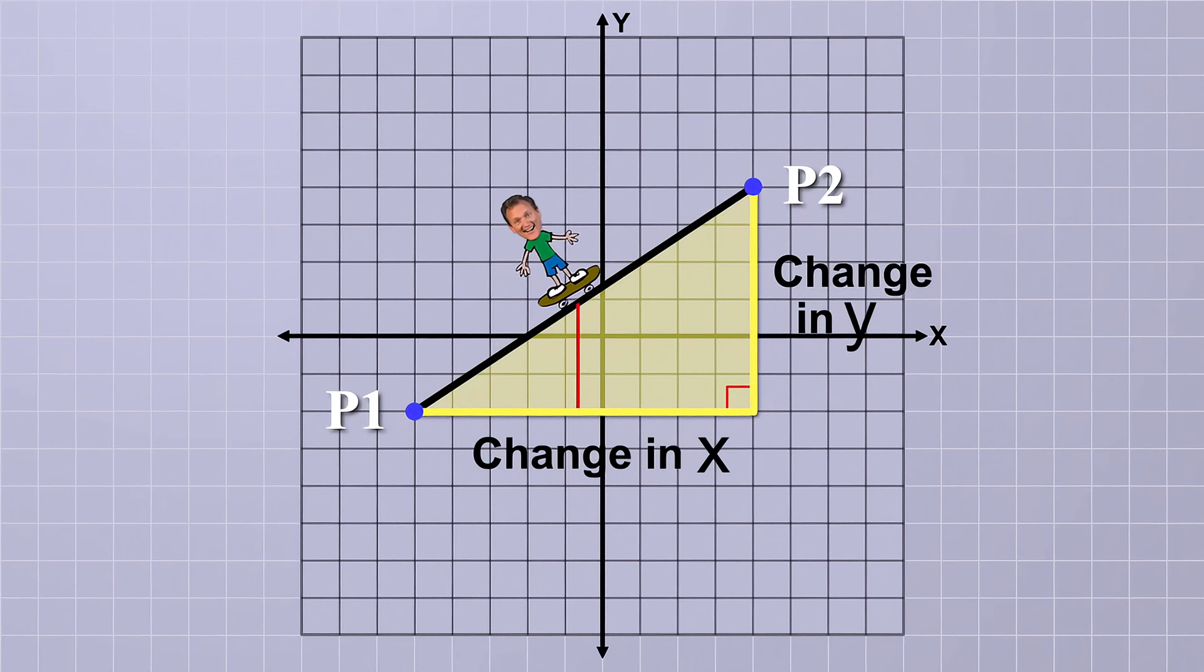Your x coordinate is changing because you're traveling to the right, and your y coordinate is changing because you're traveling up. And when you finally get to point 2, the total change in your x coordinate would be the length of the horizontal side of the triangle, and the total change in your y coordinate would be the length of the vertical side of the triangle.